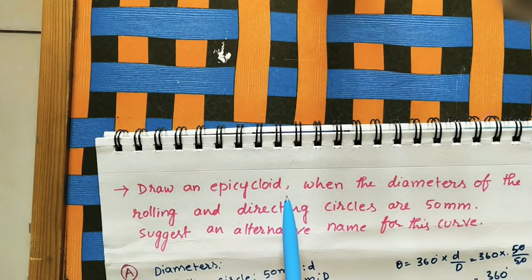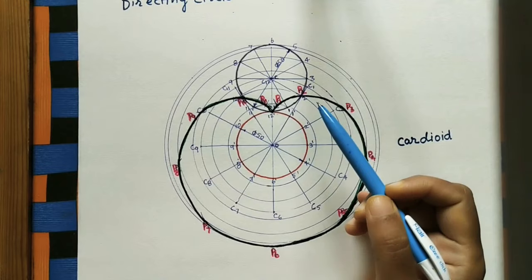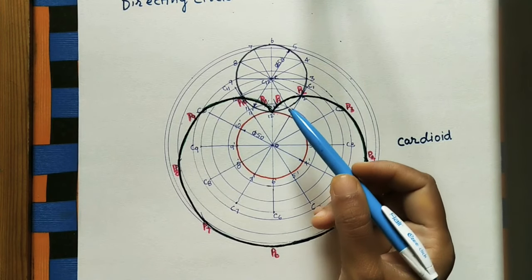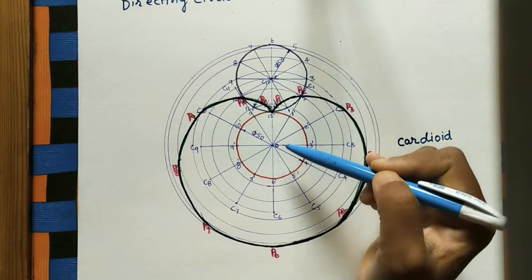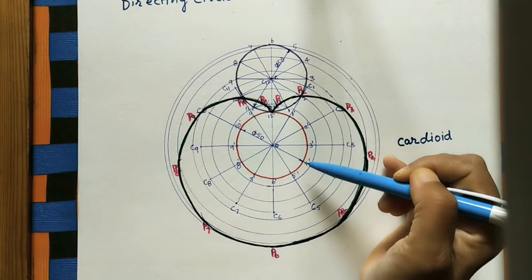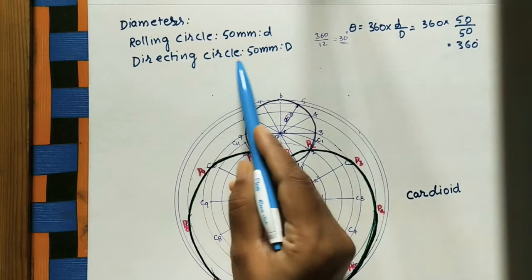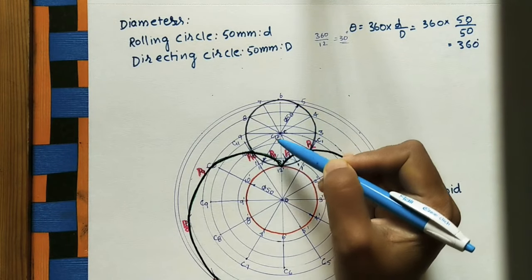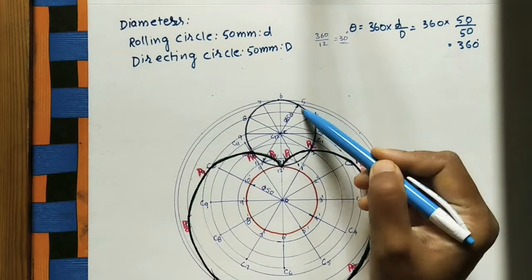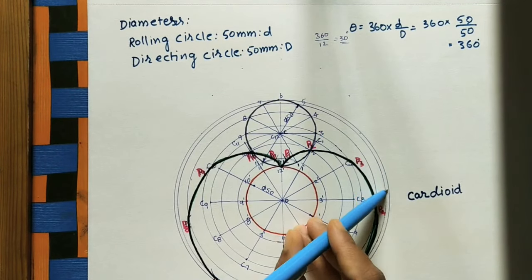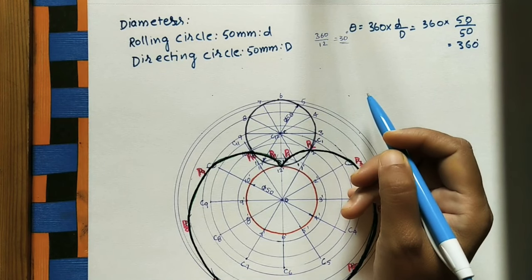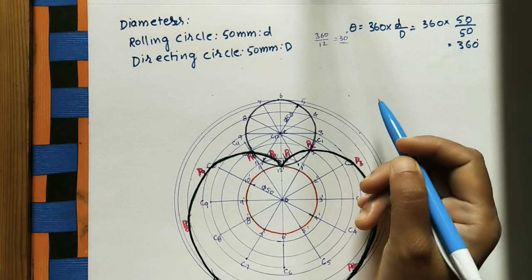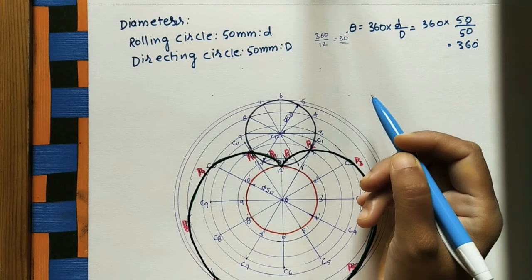Make the final curve dark. In the given question for an epicycloid, we have to suggest an alternative name — this curve is called a quadroid. We get the quadroid when the directing circle and rolling circle diameters are the same. Mark the given dimensions: directing circle diameter 50 mm with arrows on both sides, and rolling circle diameter 50 mm. This completes the quadroid. For normal cycloid, epicycloid, and hypocycloid, check the links in the description box. Please like, subscribe, and share.